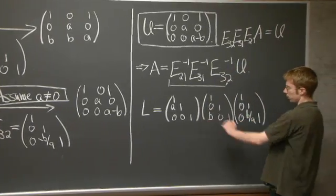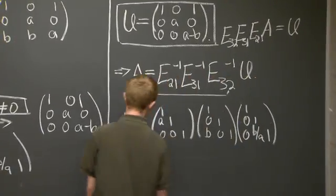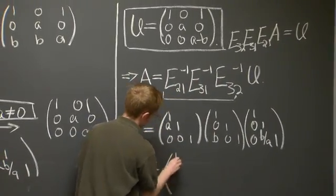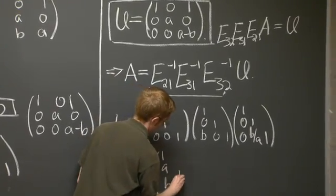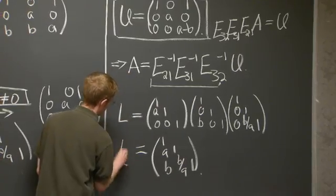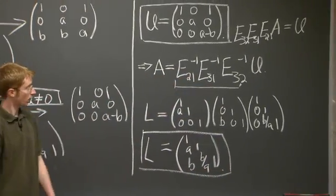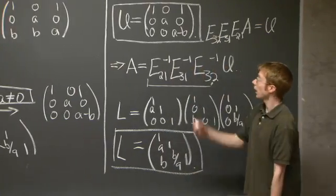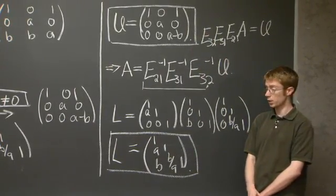And the last comment is that multiplying these three matrices is really easy in this order. Turns out all you do is you just plop these entries right in. So this is our L matrix. So now we have our U matrix and our L matrix. And we're done with the first part of the question.